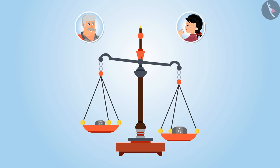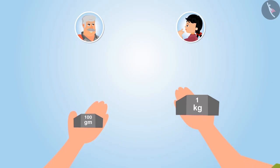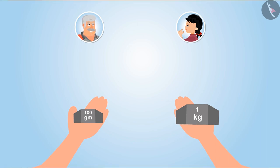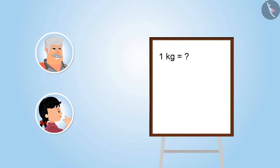Okay Neetu, try to lift both of them. While doing this, don't you feel the weight is different? Yes uncle, you are right. I haven't thought about this. But how is this possible? Because you are forgetting that 1 kg is equal to thousand grams, not hundred grams. Oh yes uncle, how did I forget this? 1 kg is equal to thousand grams, not hundred grams.